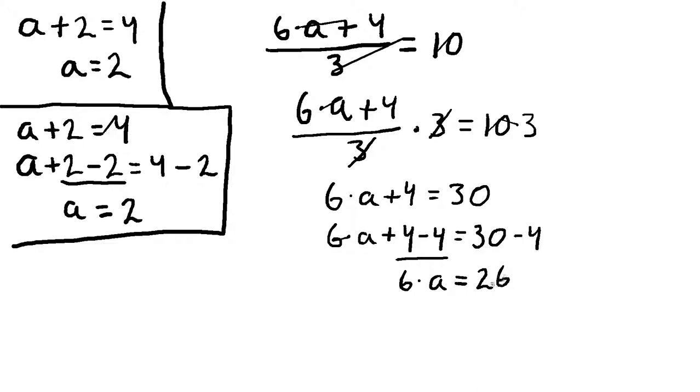So we have six times a equal to 26. Now six times a is multiplication, the opposite operation of multiplication is division, so we can divide by 6 on both sides. So we have 6 times a divided by 6 equal to 26 divided by 6. Now the multiplication by 6 is cancelled out by the division by 6, so those two cancel out leaving us with a on this side and on this side we have 26 divided by 6.